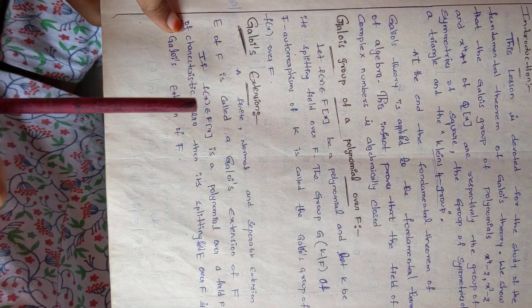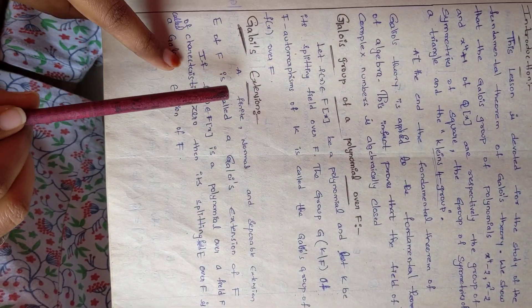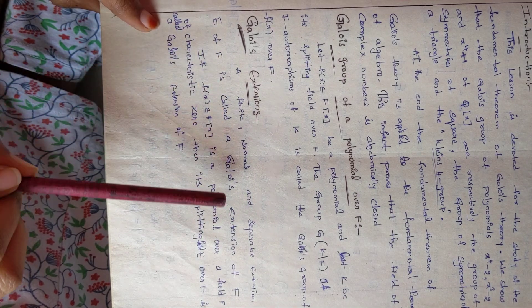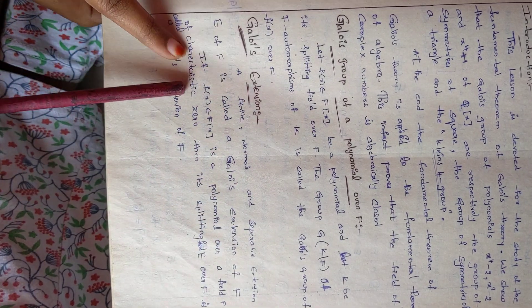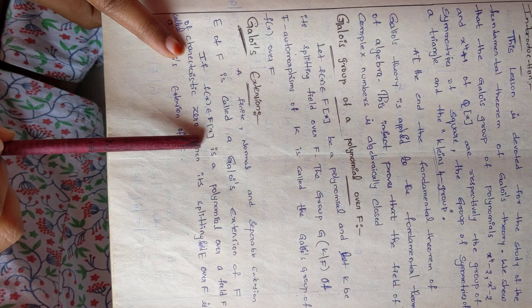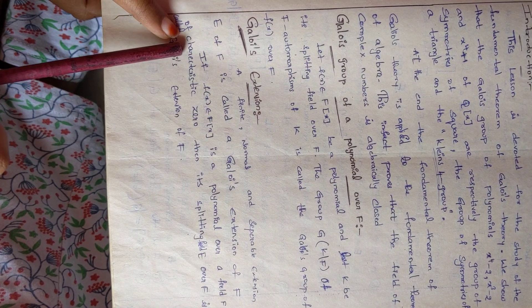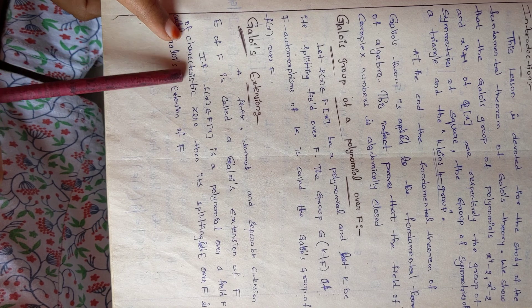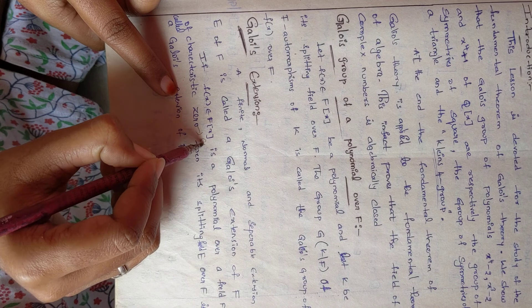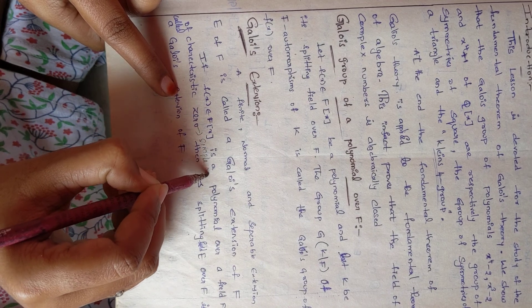So what is a Galois extension? A finite, normal and separable extension E of F is called Galois extension of F. That means if f(x) is a polynomial in F[x], then it has characteristic zero. That means it has a simple root.